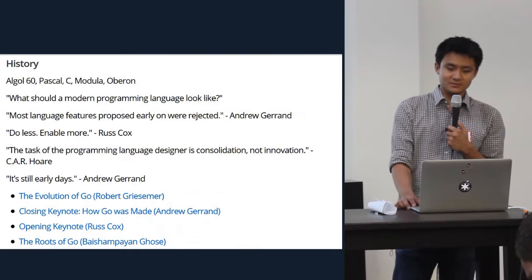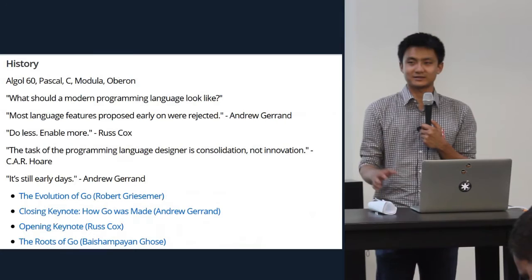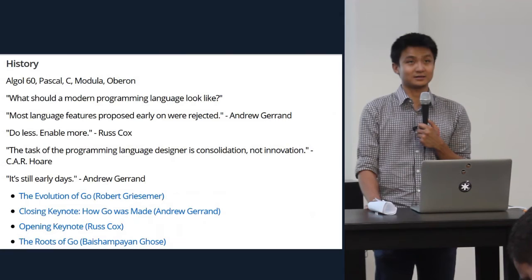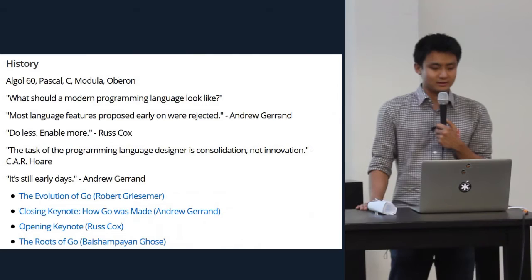These were covered in Robert Griesemer's talk on the evolution of Go — I highly encourage everyone to take a look at that, it was super informative. He basically went on a whirlwind tour of programming language history over the past 30 or 40 years, and it was really fascinating to see where the features and concepts that make Go elegant actually came from.